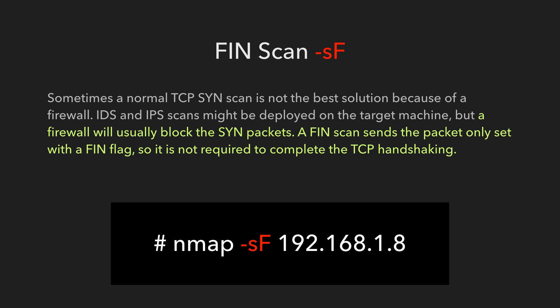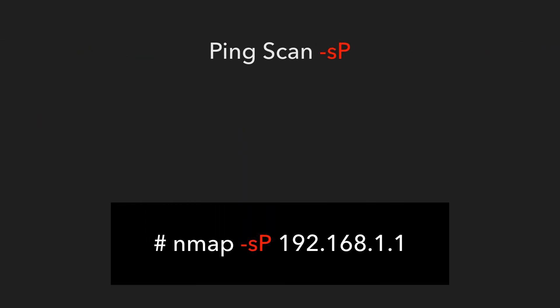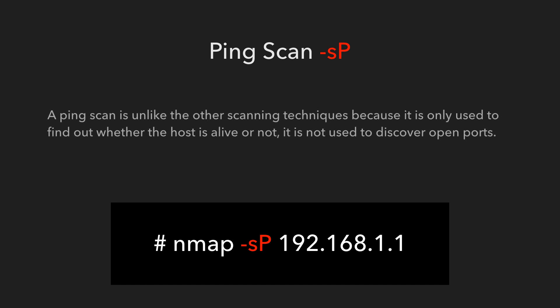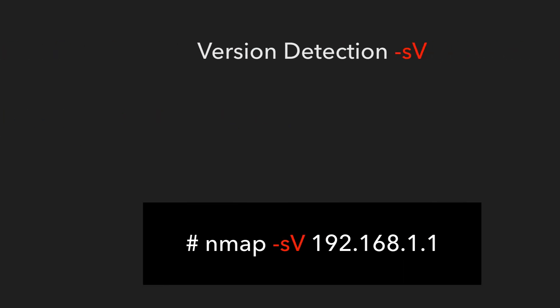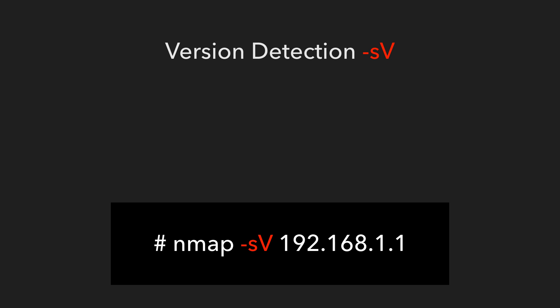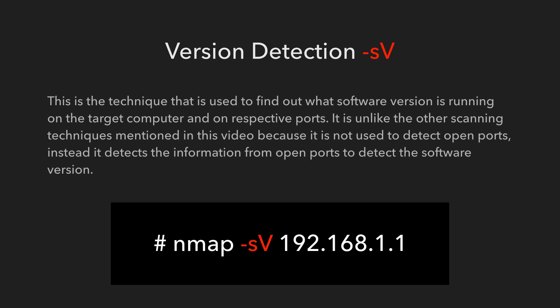PING Scan: a ping scan is unlike other scanning techniques because it is only used to find out whether the host is alive or not — it is not used to discover open ports. Version scan: unlike the other scanning techniques, this is not used to detect open ports. Instead, it detects information from open ports to identify the software version.